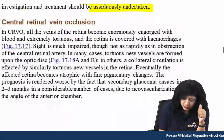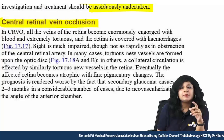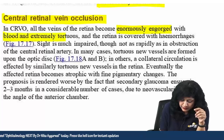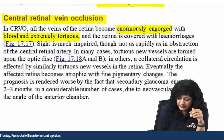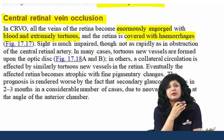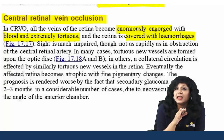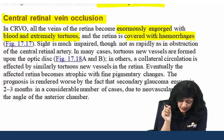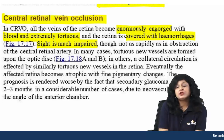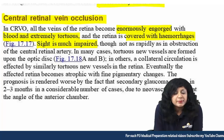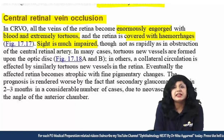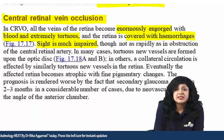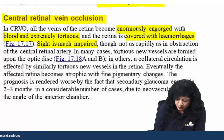In CRVO, all veins of the retina become enormously engorged with blood, extremely tortuous, and the retina is covered with hemorrhages. Unlike venous stasis retinopathy where hemorrhage is absent, in CRVO we do have hemorrhages and sight is also impaired. The veins are tortuous with new vessels, and there is significant ischemia present.